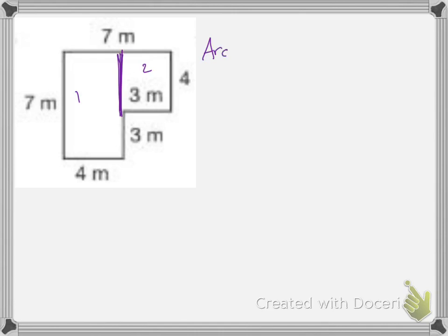So the area 1 equals 4 meters times 7 meters. So 4 times 7 is 28 meters squared.